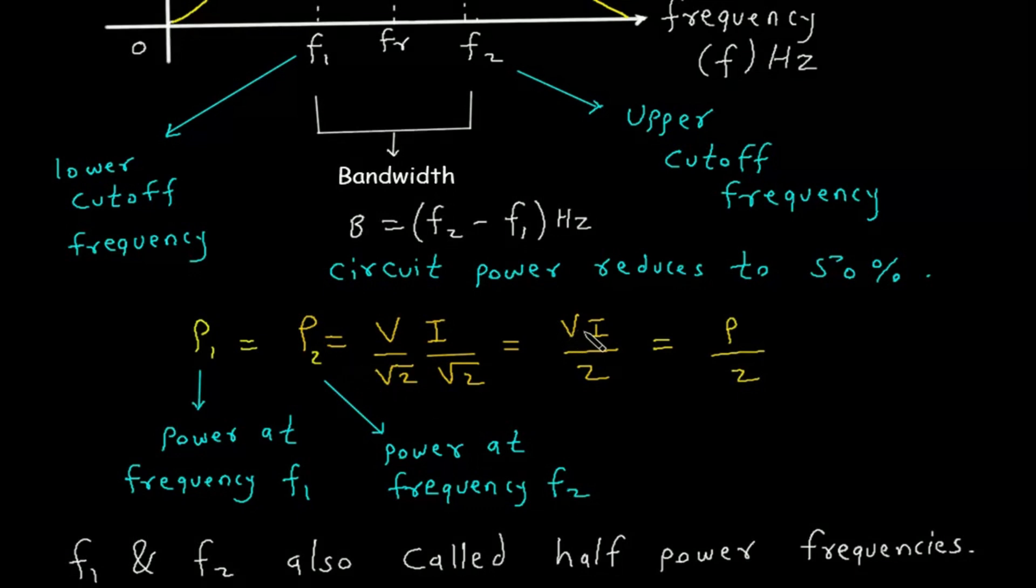Power is equal to voltage into current. Here voltage will be V divided by root 2 and current will be I divided by root 2, so root 2 times root 2 equals 2. This gives VI divided by 2. Since VI is power, we get power divided by 2. The power is half at points P1 and P2.